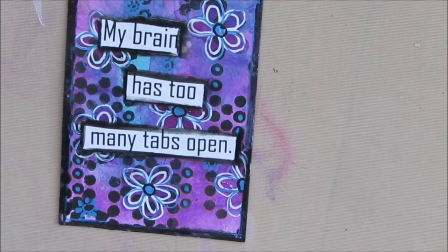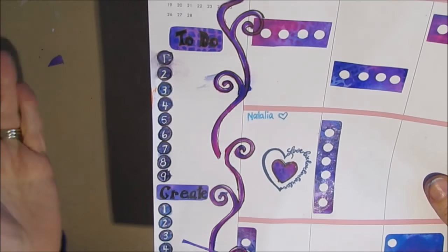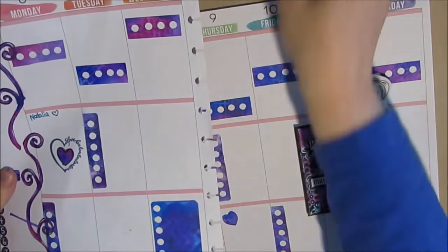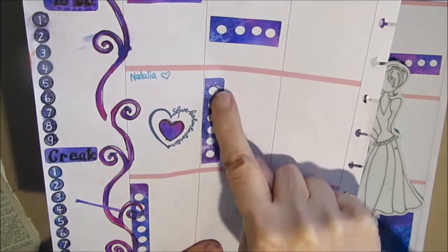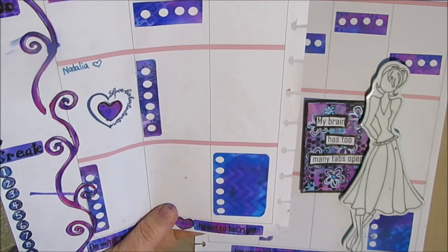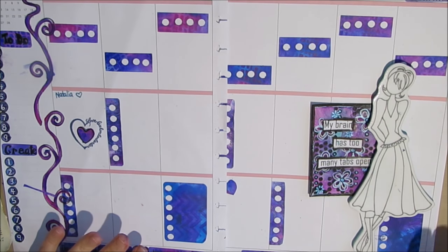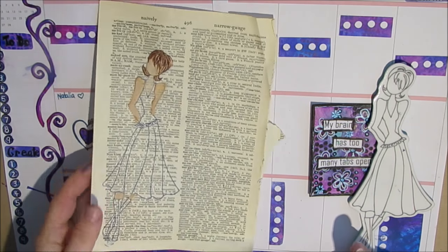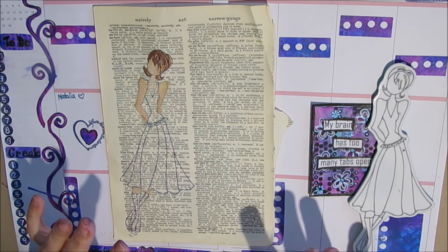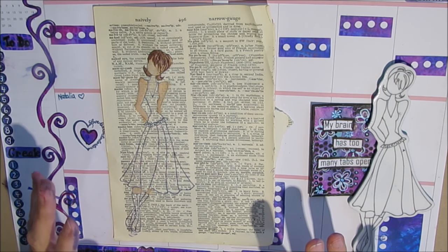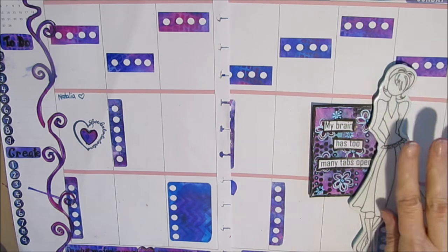You can see how just outlining the card just makes it stand out that much more. My brain has too many tabs opened. So I'm all set to have this here. And I decided to use my Uniball white to put the numbers in. The paint got a little bit dark and I couldn't see the numbers anymore. I also went and put a list on a full sticker because I wanted more color on the page. I was finding that there wasn't quite enough.